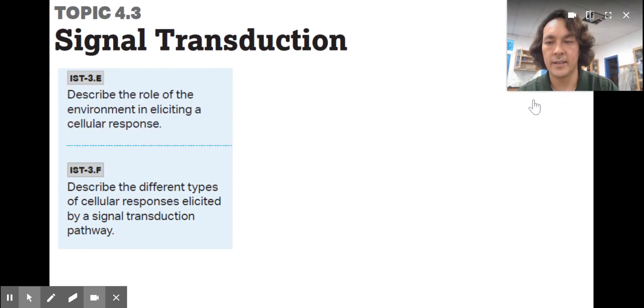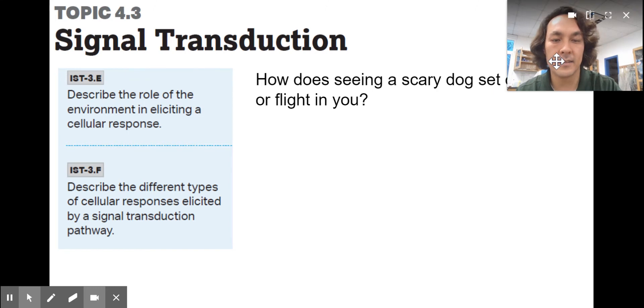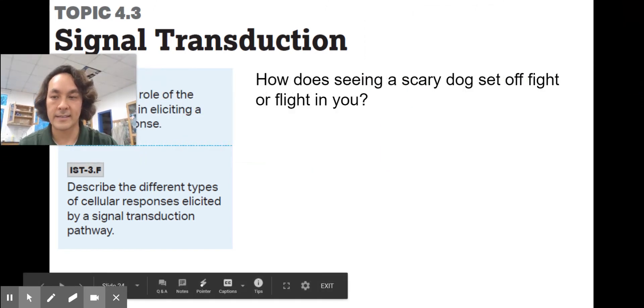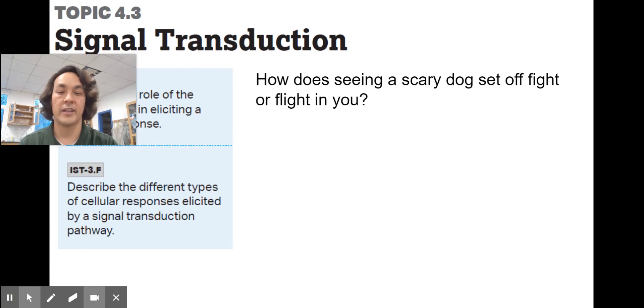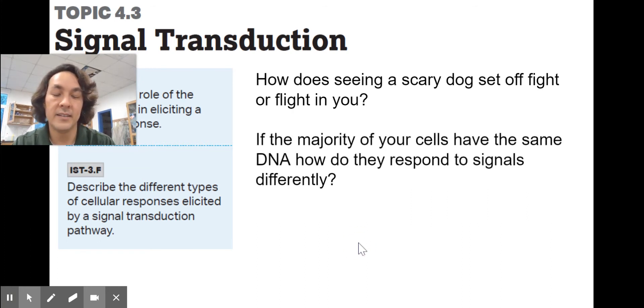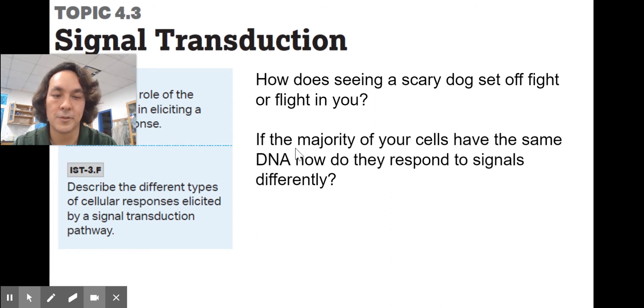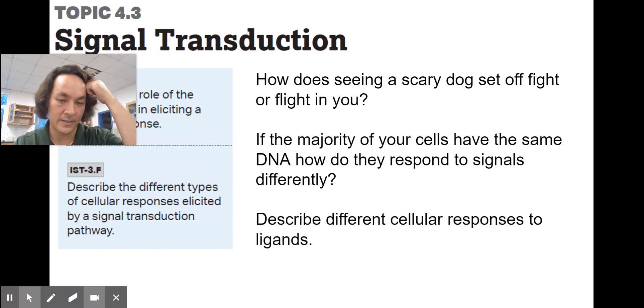Signal transduction topic 4.3. Can you describe the role of the environment in eliciting a response and different types of cell responses? How does seeing a scary dog set off a fight or flight in you? I've been talking to class, I've gotten into running in the last two years, rocking out some half marathons. It's really changed my life. But I got bit by a dog and it was really scary. I had a real fight or flight syndrome in me. I mean, I still haven't gotten over it. If I see dogs on the road, it really scares me. If the majority of your cells have the same DNA, how do they respond to cell signals differently? Can you describe different cellular responses to ligands?